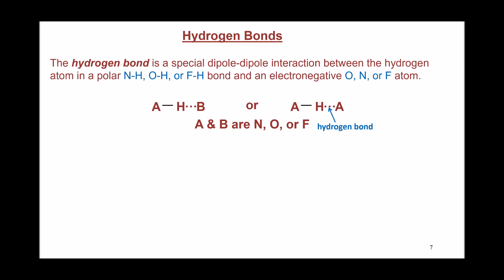A special type of dipole-dipole interaction is called the hydrogen bond. Hydrogen bonding takes place between hydrogen and any of three atoms: oxygen, nitrogen, or fluorine. If a molecule contains O–H, N–H, or F–H bonds, it will exhibit this special type of dipole-dipole attraction called hydrogen bonding. It is the strongest type of dipole-dipole attraction because those three atoms are the most electronegative atoms in the periodic table.